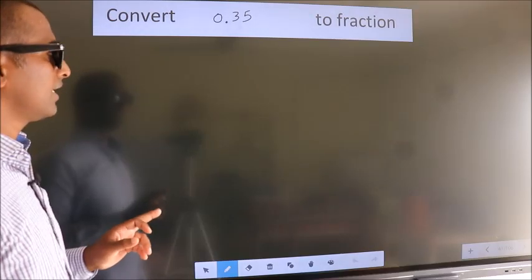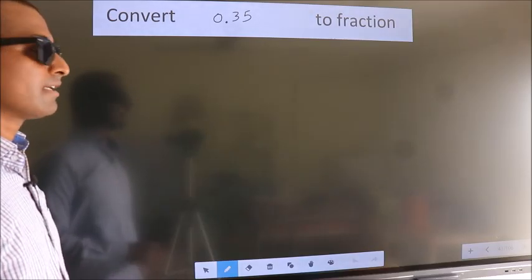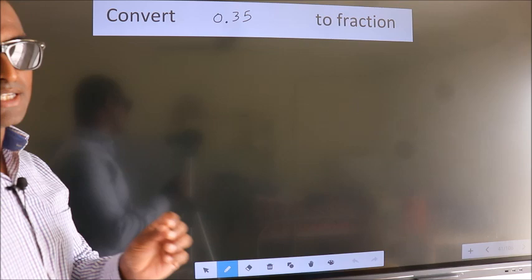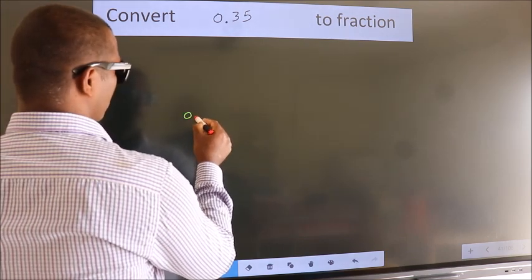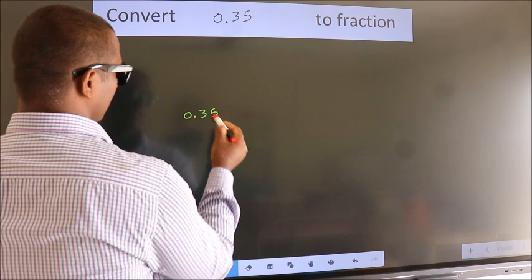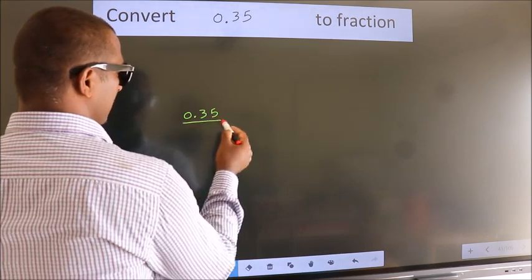Convert 0.35 to fraction. Given is 0.35, we take it as 0.35 over 1.